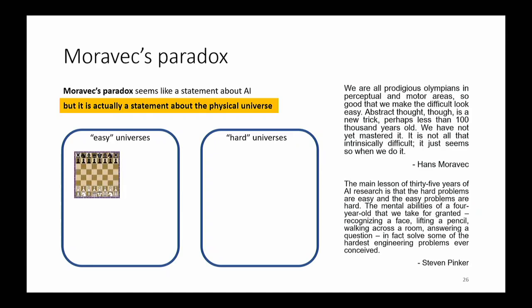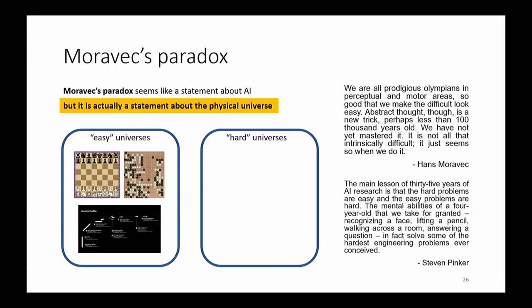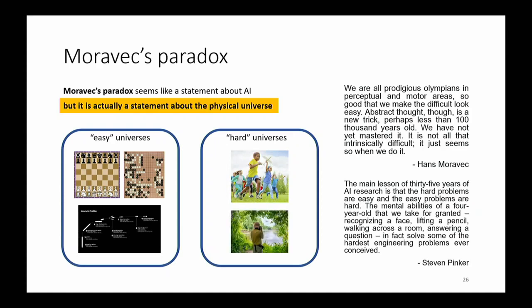The easy universes appear to be, strangely, chess, Go, and also launching a rocket — it's actually not that difficult to build a control algorithm for a rocket. The hard universes are things like interacting with other agents, playing with children, picking up chess pieces. These problems don't seem hard to us just because we need to be good at them to survive in the world we inhabit. Similarly, navigating an oil tanker halfway around the world is manageable with A-star search, but you still want a person on board in case something breaks in the engine room and someone has to go fix it with a wrench.